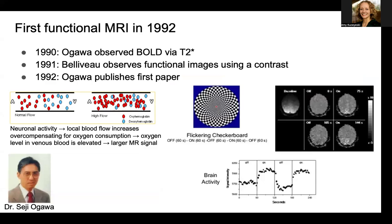So that's brain structure. But what about brain function? The first functional MRI was done in 1992. There was this brilliant researcher, Seiji Ogawa, and he observed that there was this oxygenation level dependent signal on T2 star in 1990. The blood oxygenation level dependent or BOLD signal is essentially an increase in the oxygenated blood in a specific part of the brain.